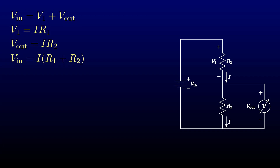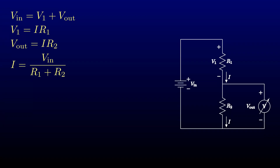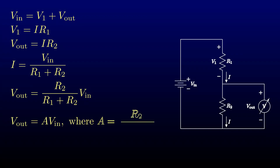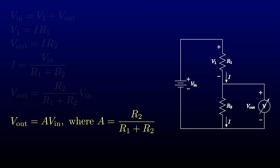We've just proven a fact that you probably knew already: two resistors connected in series behave like a single resistor whose value is the sum of their values. Solve for the current and substitute back into the equation for the output voltage, and here we have the equation for how a voltage divider acts. It multiplies the input voltage by some constant that's less than 1 — you can think of it as an amplifier with a gain less than 1, an unamplifier, if you will. I'll assign the symbol A to the value R2 over the quantity R1 plus R2. This ratio is one of the basic things to keep in mind when you're designing or analyzing a voltage divider.